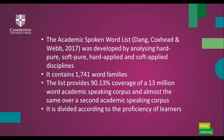The Academic Spoken Word List was developed by looking at different disciplines: hard pure (like chemistry), soft pure (applied linguistics or applied biosciences), hard applied, and soft applied. In the Danish system you'd call these wet science and dry science. The idea was to find vocabulary occurring across these four disciplines in spoken academic discourse. The word list itself has 1,741 word families, so it's quite big.